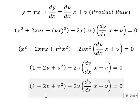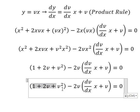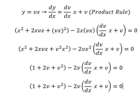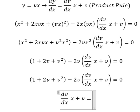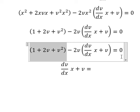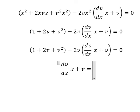Next, I will move this term to the right and divide both sides by negative 2v. So when we move this term to the right, we get a negative sign. Negative and negative give us a positive.